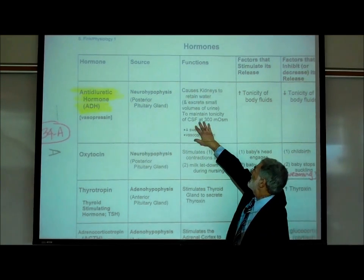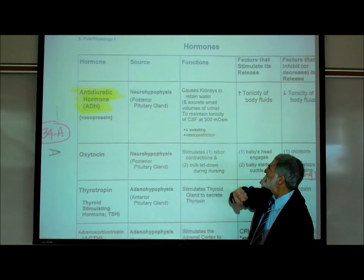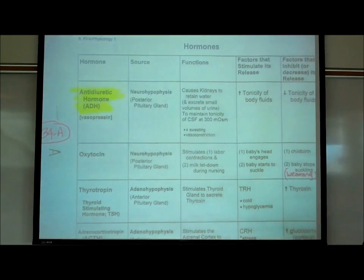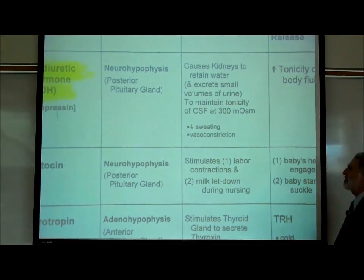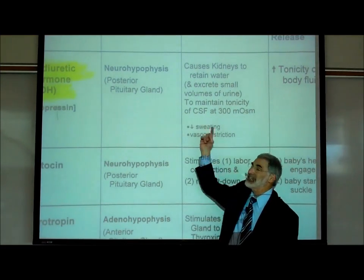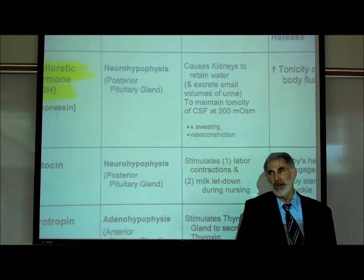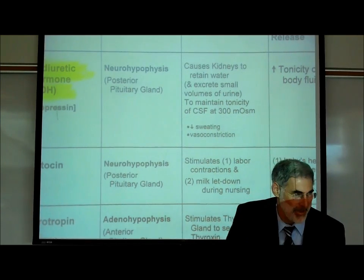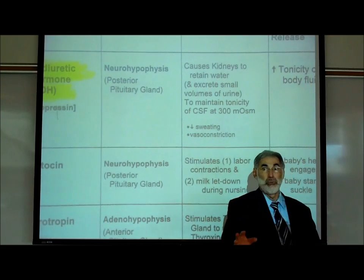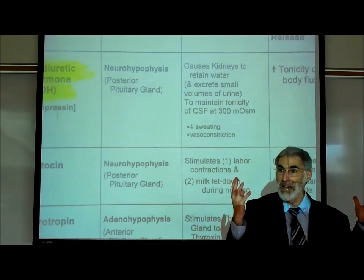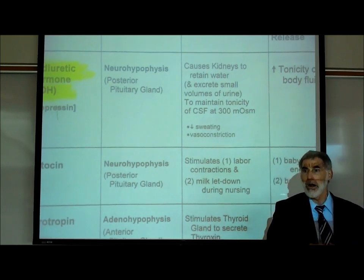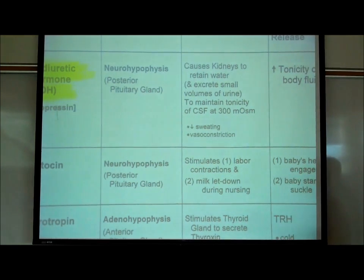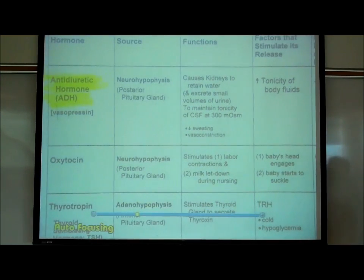The whole idea is to maintain the tonicity at 300 milliosmolar. The most important fluid to keep at 300 milliosmolar is the CSF — the cerebrospinal fluid surrounding our brain and spinal cord — because the last cells we want swelling or collapsing are our brain cells. That's really ADH's most critical job.